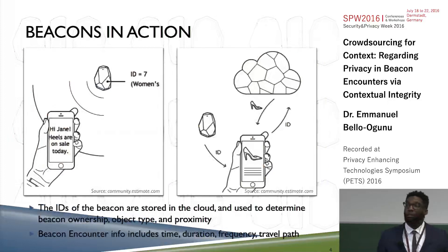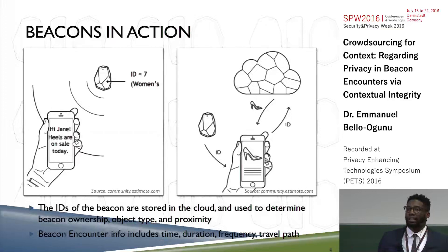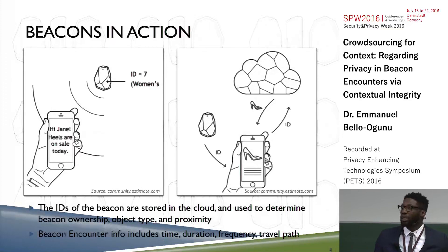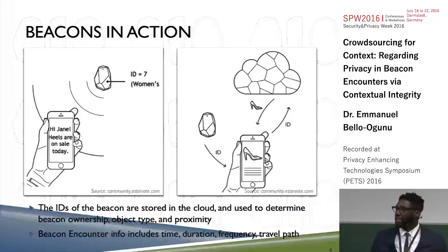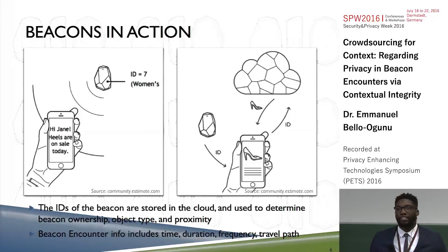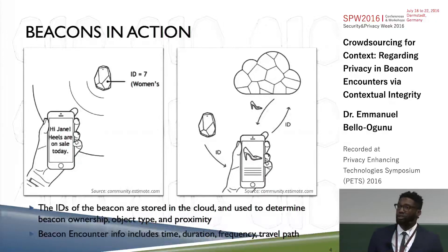As far as the kind of information that you get from these encounters, the ID of the beacon is what is being transmitted and that's stored somewhere in the cloud, so that when the application on the device discovers that signal it will check the cloud to determine who owns the beacon, what kind of items might be nearby or associated with it, as well as the proximity of the user. The pieces of information that mark an encounter include the time you're there, the duration, the frequency of visits, even the travel path — the specific path you took within a space equipped with beacons. A lot of this provides a wealth of information to beacon providers and retailers, especially from an analytics perspective.